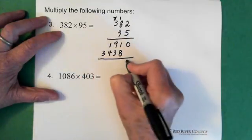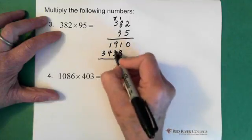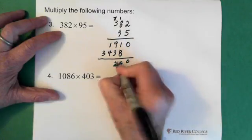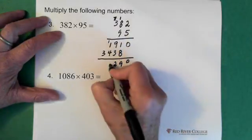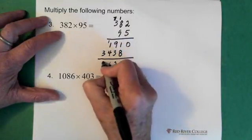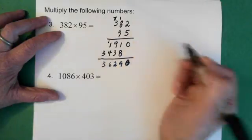At this point we add it up. So we end up with a 0, 9. 9 and 3 is 12. So the 2 goes down here, the 1 goes up here. That's a 6 and that's a 3. Oh, and that's supposed to be a 0.